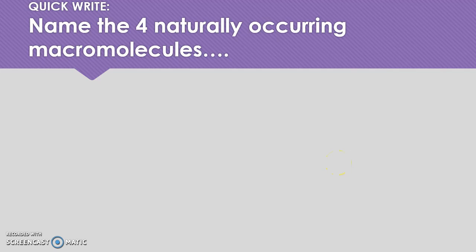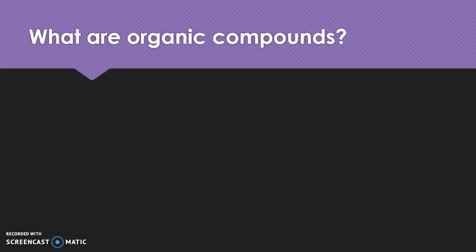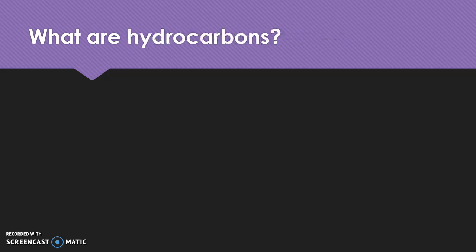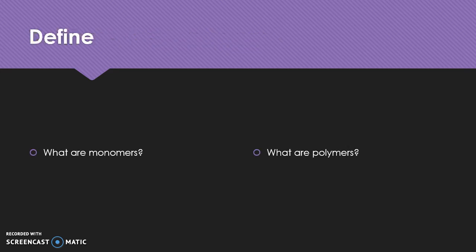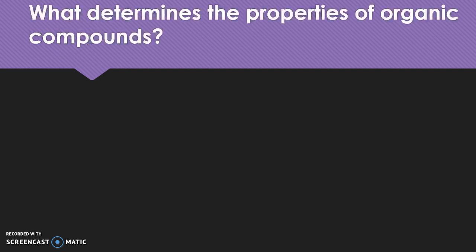Name the four naturally occurring macromolecules. What are organic compounds? What are hydrocarbons? What are monomers? What are polymers? What determines the properties of organic compounds?